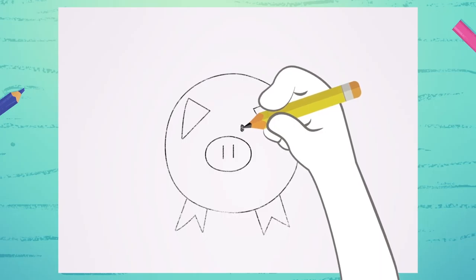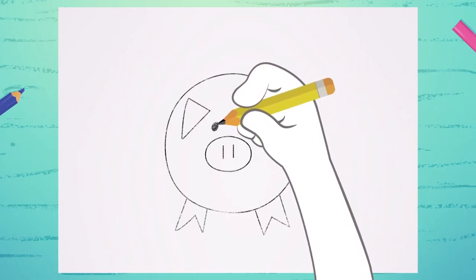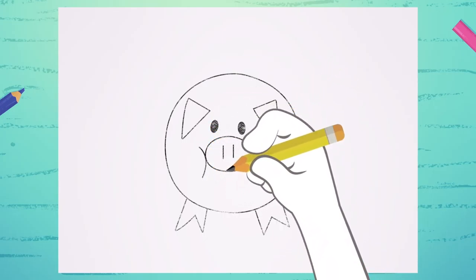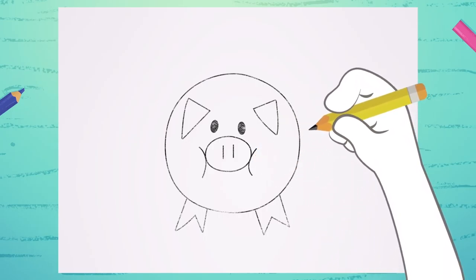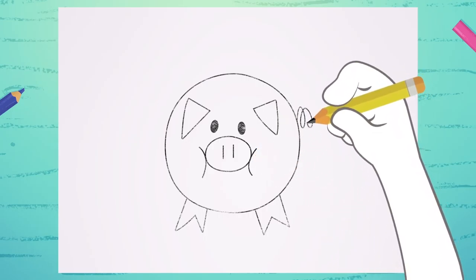Now, we just do the eyes. Two little marks here for the cheeks. And the little tail here, in the form of a spring!